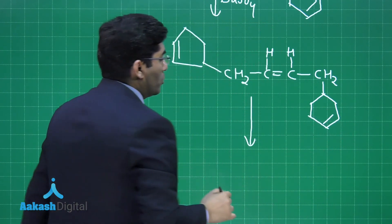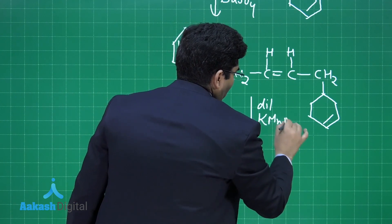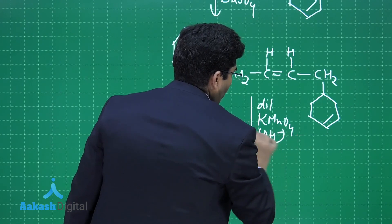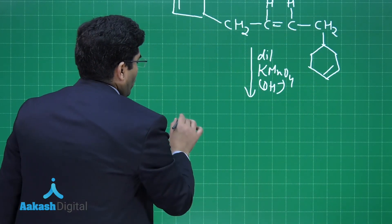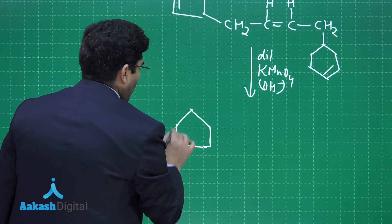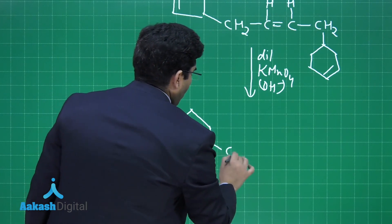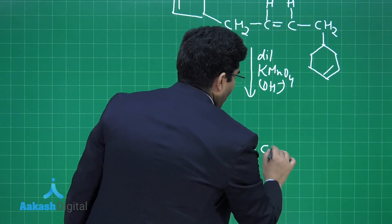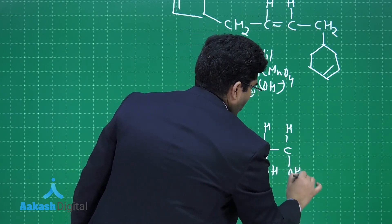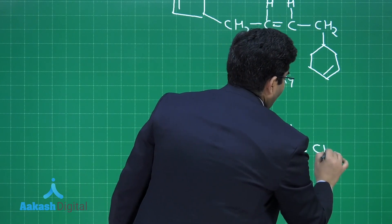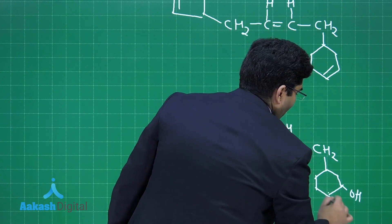In the next reaction, he is reacting it with Bayer's reagent — that is dilute KMnO₄ in basic medium. Syn addition will take place and we will get vicinal diols. The oxidation of the double bond will take place here. We will get OH here, one OH here — vicinal diol — and CH₂, CH₂, CH₂, and at the end this double bond will be oxidized and we will get 2 OH here.